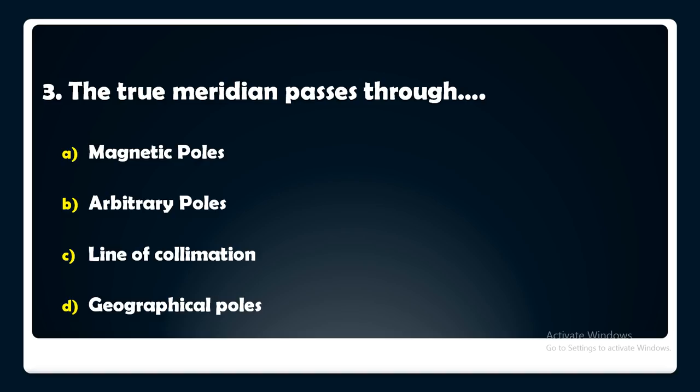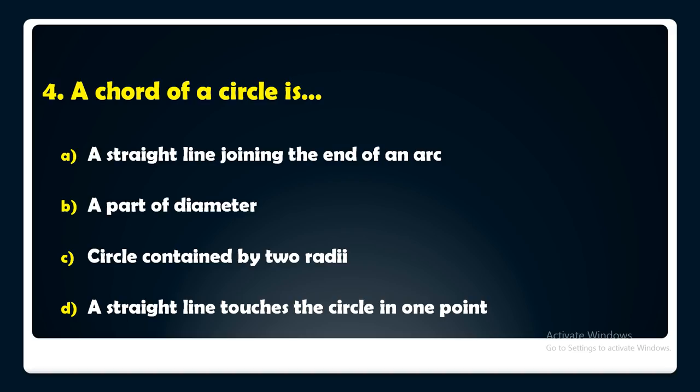A chord of a circle is — a straight line joining the end of an arc, a part of a diameter, a circle contained by two radii, or a straight line that touches the circle in one point. The answer is: a chord of a circle is a straight line joining the end of an arc.